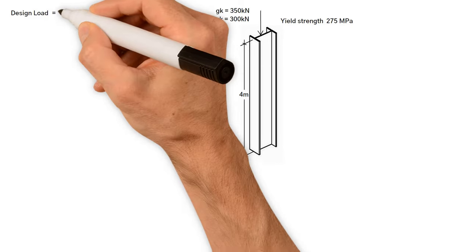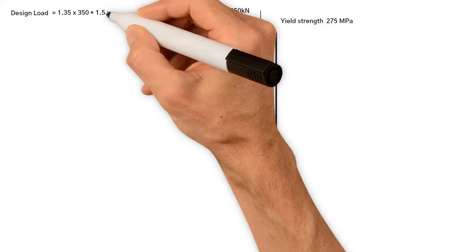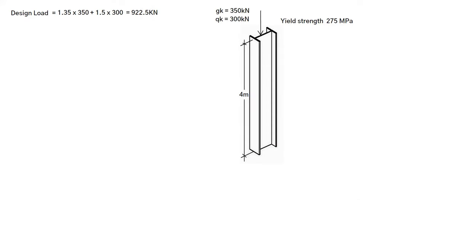So, the design load equals 1.35 times 350, plus, 1.5 times 300, which equals 922.5 kilonewtons.